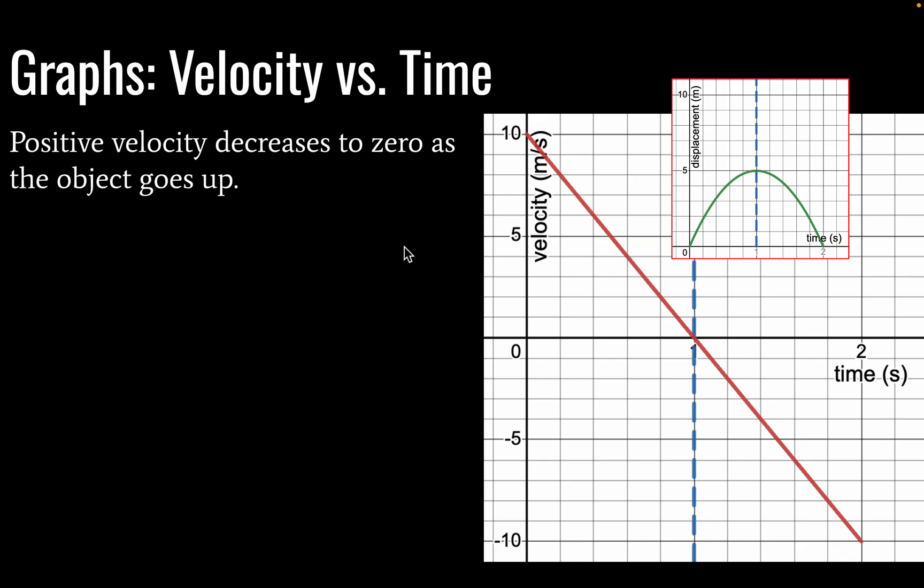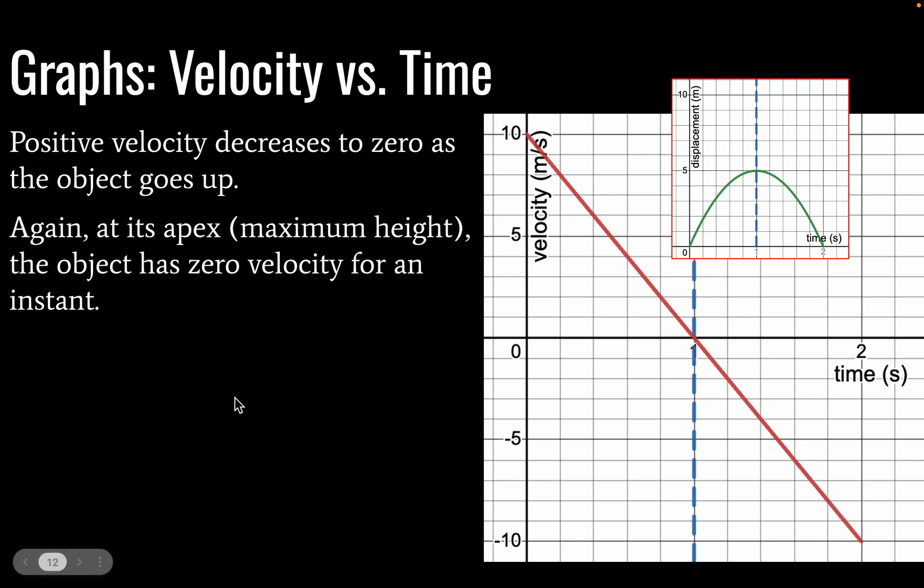Okay, so our positive velocity is going to decrease to zero as the object goes up. And then after the apex, as we see here, our object is coming back down and our velocity will now be negative.